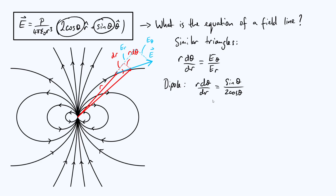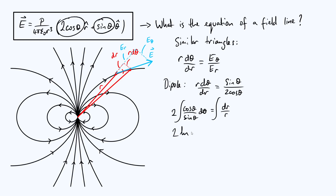This is a separable first-order differential equation, so we put all the r's on one side and all the θ's on the other. Multiplying through by 2cosθ / sinθ and by dr / r, we get (2cosθ / sinθ)dθ on the left and dr / r on the right. Integrating both sides: since cosθ is the derivative of sinθ, the left side gives 2·ln|sinθ|, and the right side gives ln|r| plus a constant of integration.